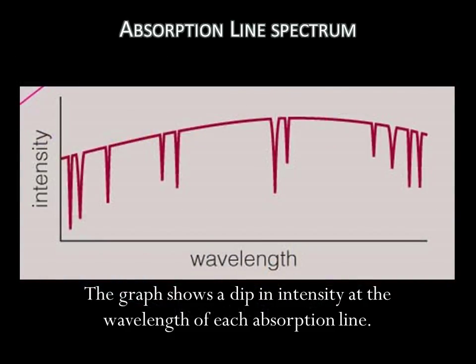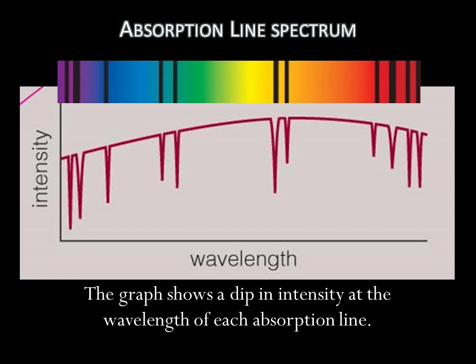When we look at the absorption line spectrum as a graph of intensity versus wavelength, the dark absorption lines appear as dips on a continuous background. The background is from the light source. The dips are where there is less light, exactly at the wavelengths where the electrons absorbed the photons from the light.